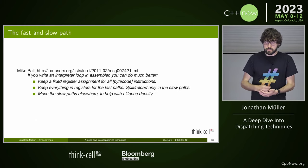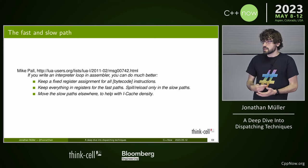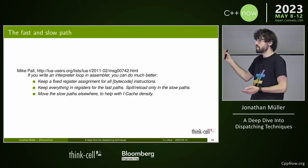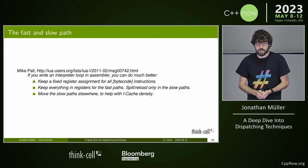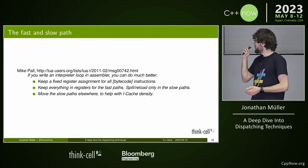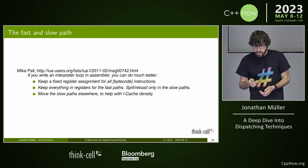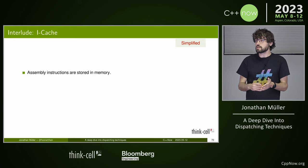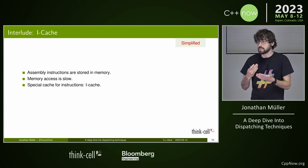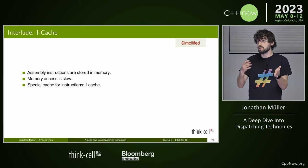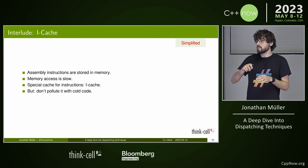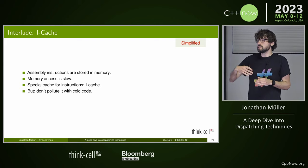Continuing with Mike Pall's email about assembly advantages: you can keep everything in registers in the fast path and spill and reload only on the slow path, moving the slow path elsewhere to help with iCache density. The iCache is a special CPU cache for current instructions. Since it has a fixed size, you don't want to pollute it with rarely-executed code. You want to keep frequently-executed instructions in the iCache.